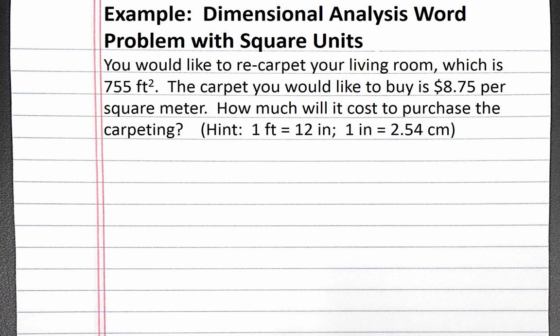In this example problem, we'll use dimensional analysis to solve a word problem with square units. Our problem reads: you would like to re-carpet your living room, which is 755 square feet. The carpet you would like to buy is $8.75 per square meter. How much will it cost you to purchase the carpeting?